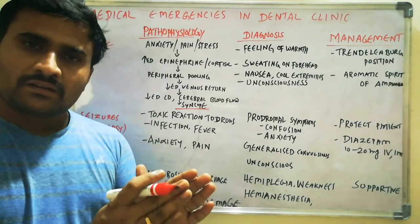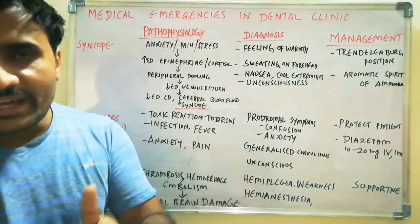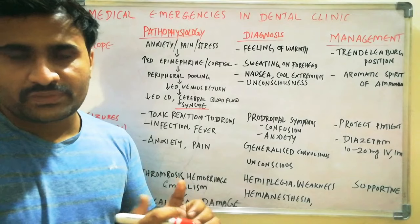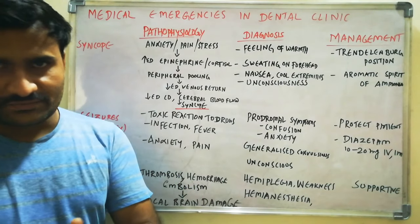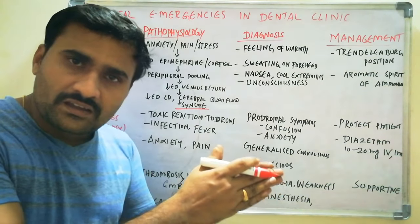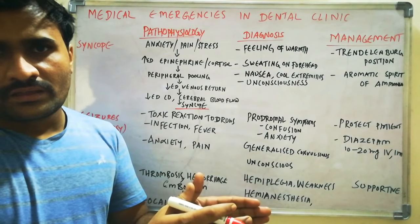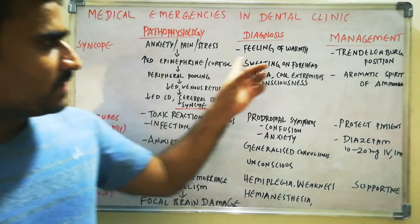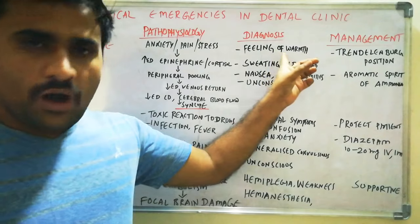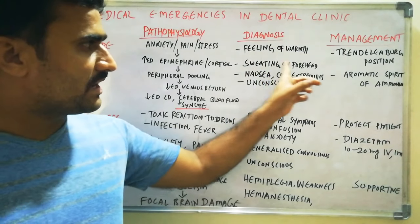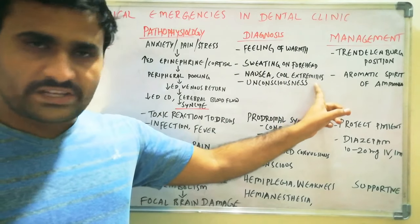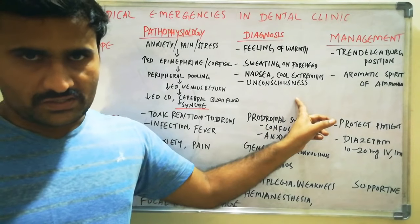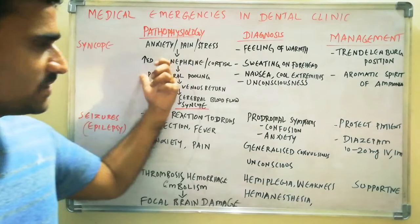Epinephrine can cause vasoconstriction or vasodilation depending on which receptors it acts on: beta-2 receptors cause vasodilation, alpha-1 receptors cause vasoconstriction. In syncope, the patient will feel warmth, sweating on the forehead, nausea, cool extremities, and ultimately will lose consciousness. These are the features by which you can recognize syncope.